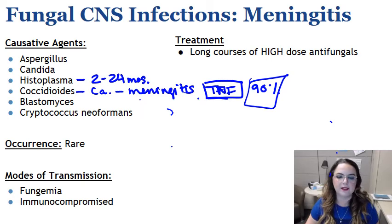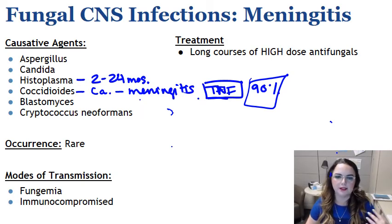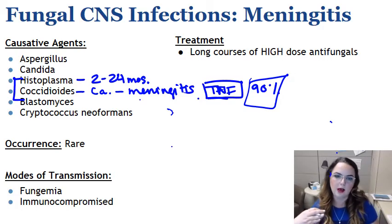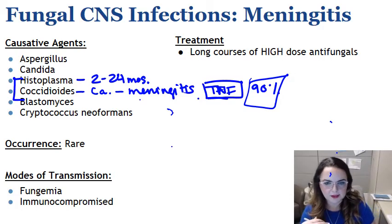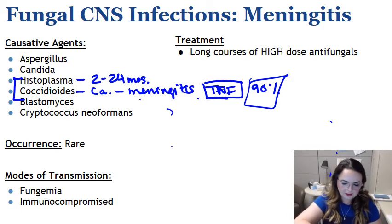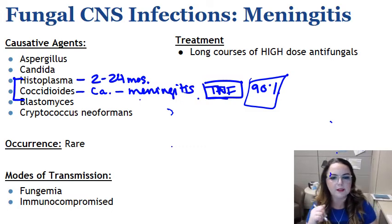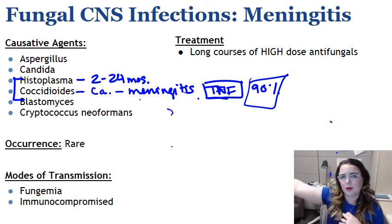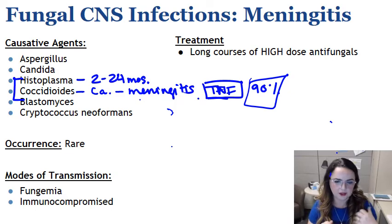Blastomyces, unlike coccidioides, is one we definitely see locally. Blasto and histo are common in the Midwest, confined largely to the Mississippi River Basin and around the Great Lakes.